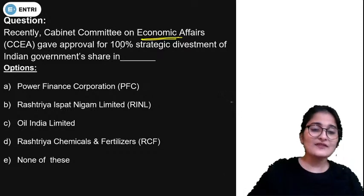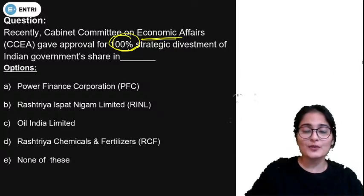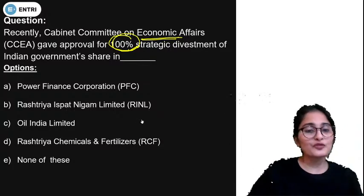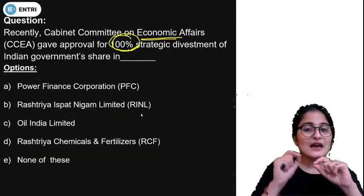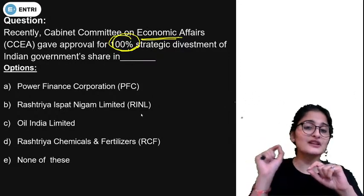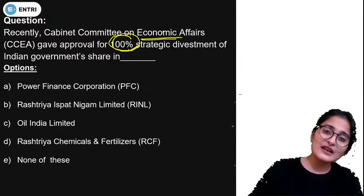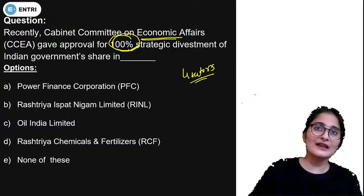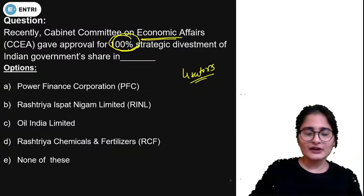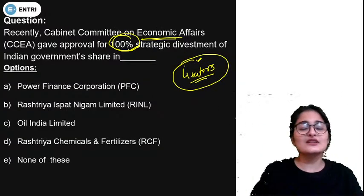Next question: The Cabinet Committee on Economic Affairs has given approval for 100% strategic disinvestment of the Indian government's share in which of the following companies? Recently, 100% disinvestment has been approved by CCEA. The government is doing disinvestment in a lot of organizations because the budget has announced that a lot of disinvestment is going to take place. There are four sectors identified for this purpose.